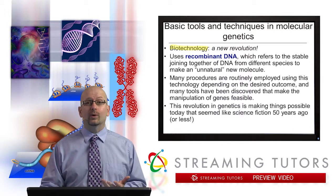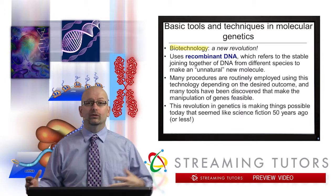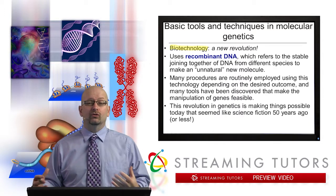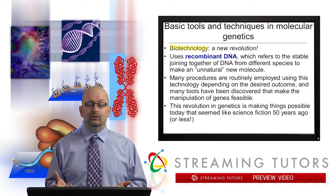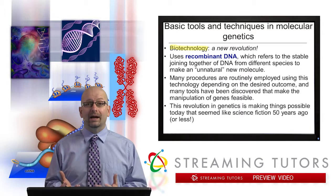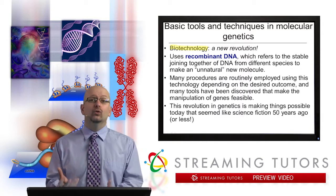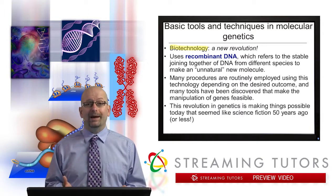Selective breeding, just as one example — when human beings started to take wolves and breed them in a selective way, the result was dogs, and dogs of all different types. So in a sense, that's using some very rudimentary knowledge about biology to do something. It's applied biology, which is really what biotechnology is.